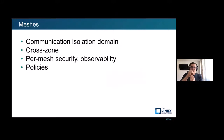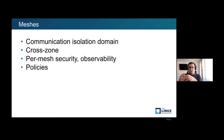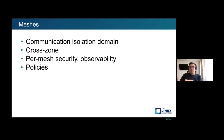One of the basic concepts in Kuma are meshes. Meshes are communication isolation domains. If you have several teams that want to share the same infrastructure, they would typically use different meshes. Meshes are a cross-zone concept — one mesh can span multiple zones, even mixing Kubernetes and universal deployments. All the policies we'll see next — security settings, observability, and so on — are per mesh. All the rules you apply for your traffic are scoped per mesh, forming one communication isolation domain.